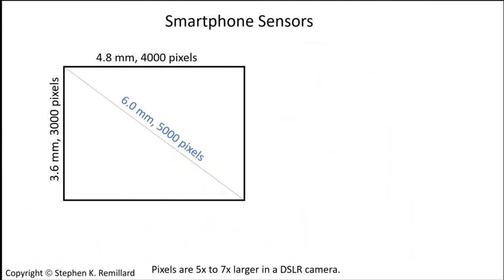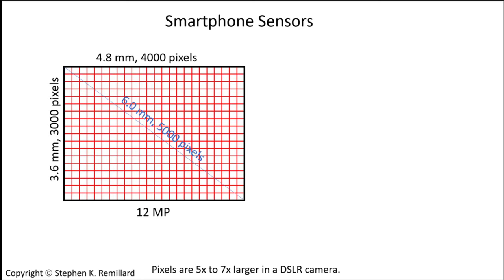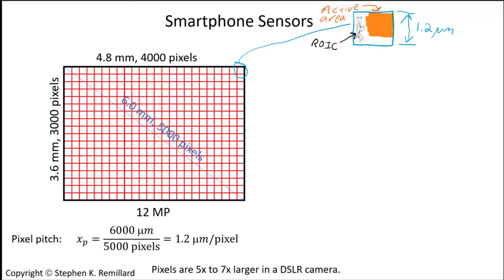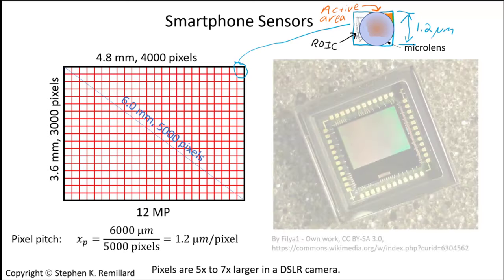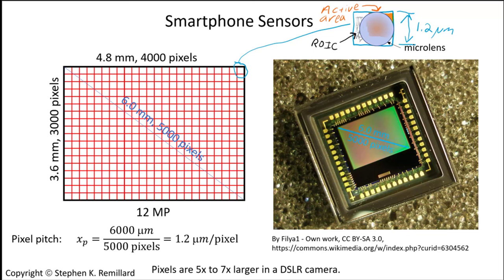Smartphone sensors these days, they measure 4.8 by 3.6 millimeters usually, they have 4,000 by 3,000 pixels or 12 megapixels. The resulting pixel pitch or separation between pixels is 1.2 microns. As there is readout integrated circuitry taking up space on the surface as well, pixel pitch isn't exactly the width of a pixel. To keep the efficiency high, a microlens is positioned above each pixel to focus light onto the active area. And here is an actual detector, in this format, ready to take the 4 by 3 photos that fit nicely on your phone screen in both landscape and portrait orientation.